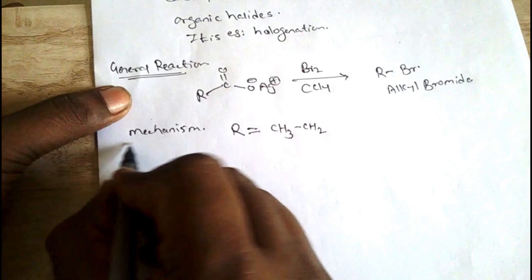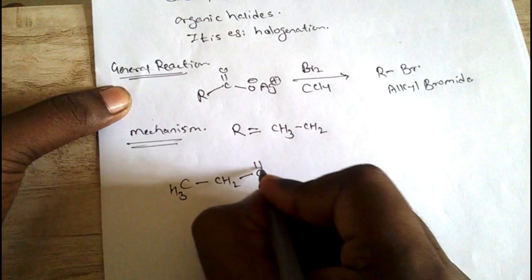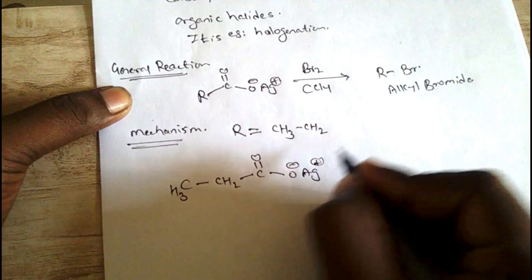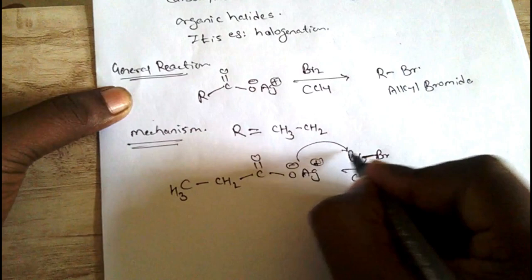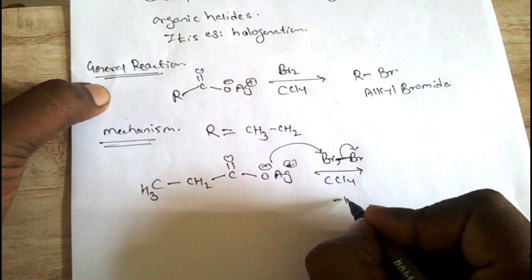CH₃CH₂COO⁻ Ag⁺ with Br₂. Br bond Br. In CCl₄, this negative charge attacks here and this bond shifts to here. The Br Br bond breaks, Br⁻ leaves. We get a structure.